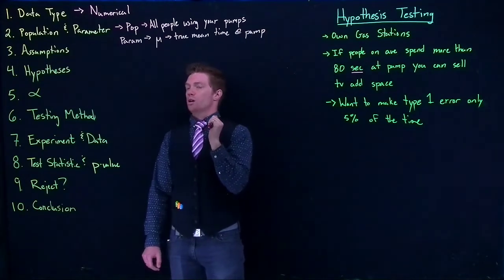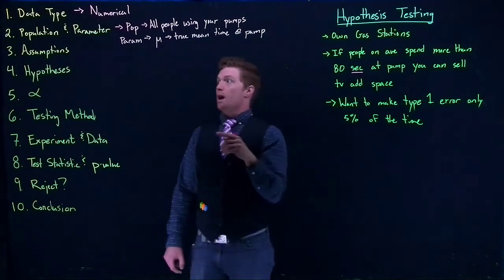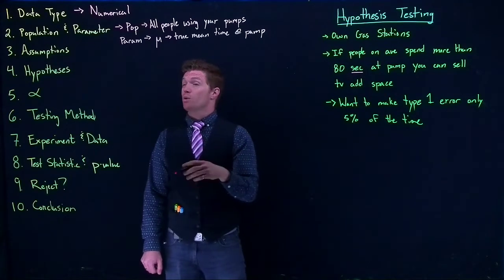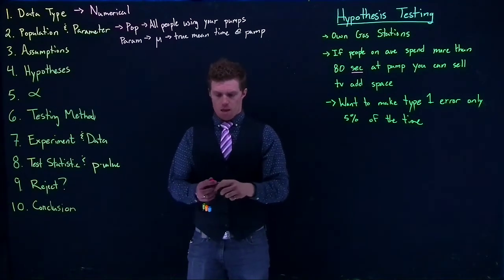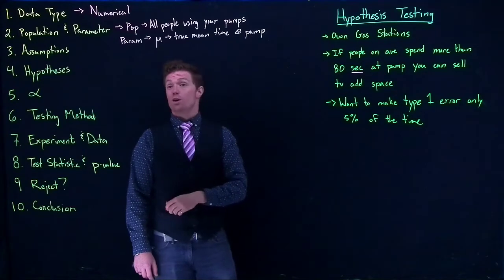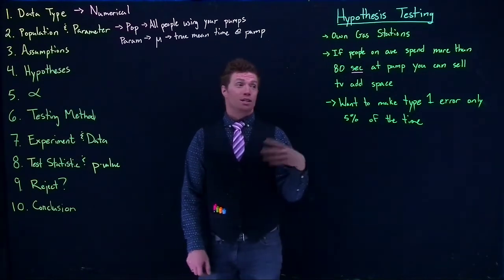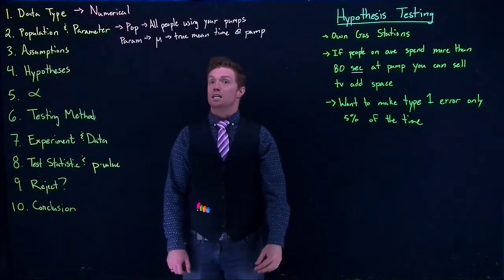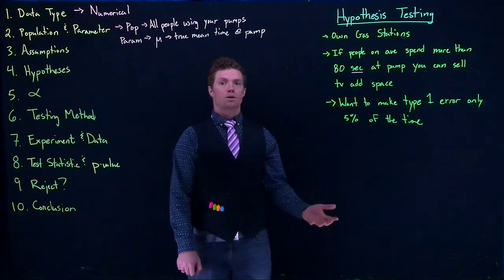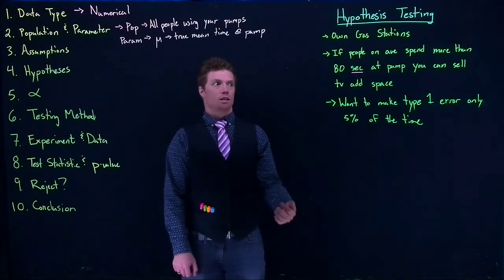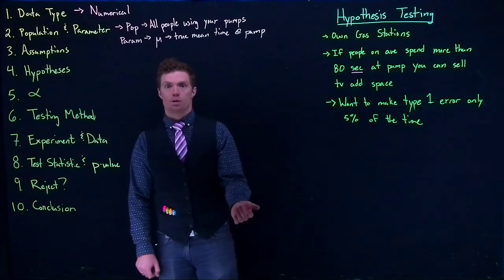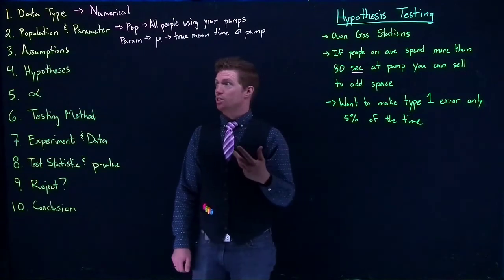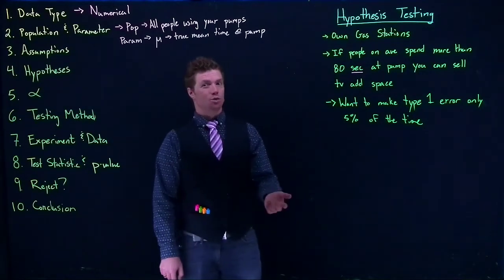Our assumptions are really going to be about how we take our sample — is it going to be a good sample — and whether we meet the central limit theorem. I don't think the data will be normally distributed because some people, like truckers with huge gas tanks, might spend a ton of time, while a motorcyclist might spend just a couple of seconds. So I can't just assume it's normally distributed.